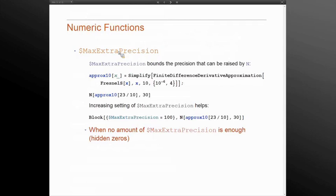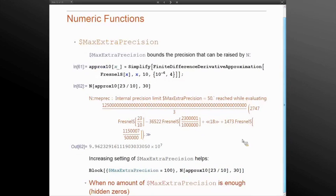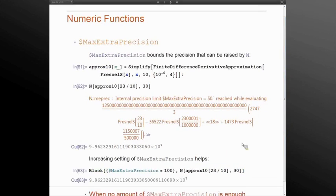We can limit how much precision N will raise by using dollar max extra precision. If we are asking for precision 10, evaluating with precision 30 will produce a message that that's impossible. So setting locally max extra precision will let you do the job.